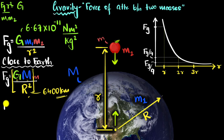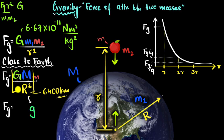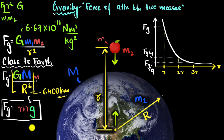Therefore, we can simplify this and say the force of gravity on objects close to Earth equals all those constants bunched together — we'll give it a symbol: small g. It's not the same thing as capital G. So the force of gravity would be m times small g. This becomes our simplified expression for the force near Earth.